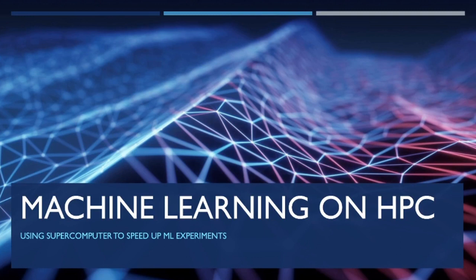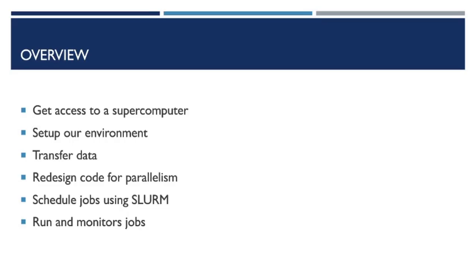We will go through the following steps. First, we're going to get access to a supercomputer. Then, we're going to set up our environment by downloading some code. Then, we're going to transfer data that we need to analyze. After that, we're going to redesign the code that we already created for parallelism. We're going to schedule the jobs using Slurm. And finally, we're going to run and monitor those jobs.